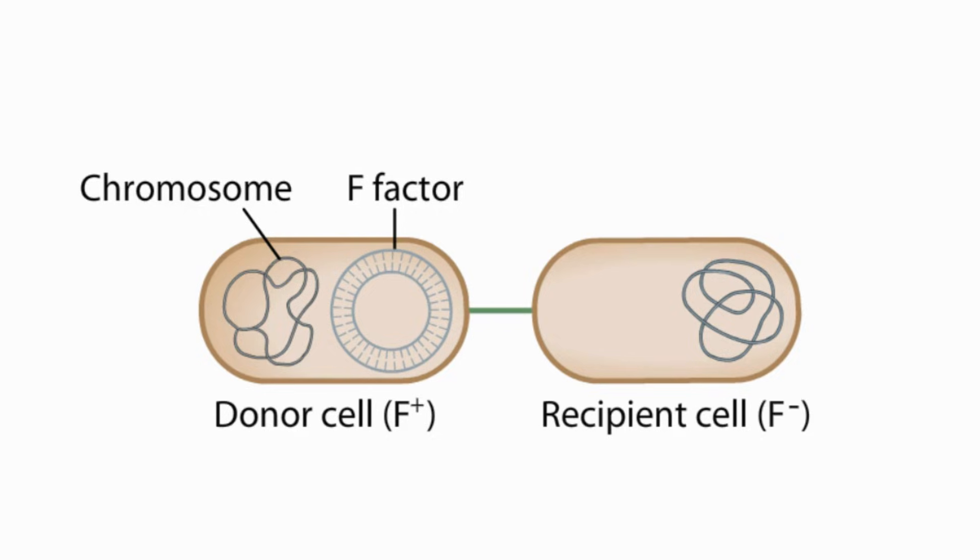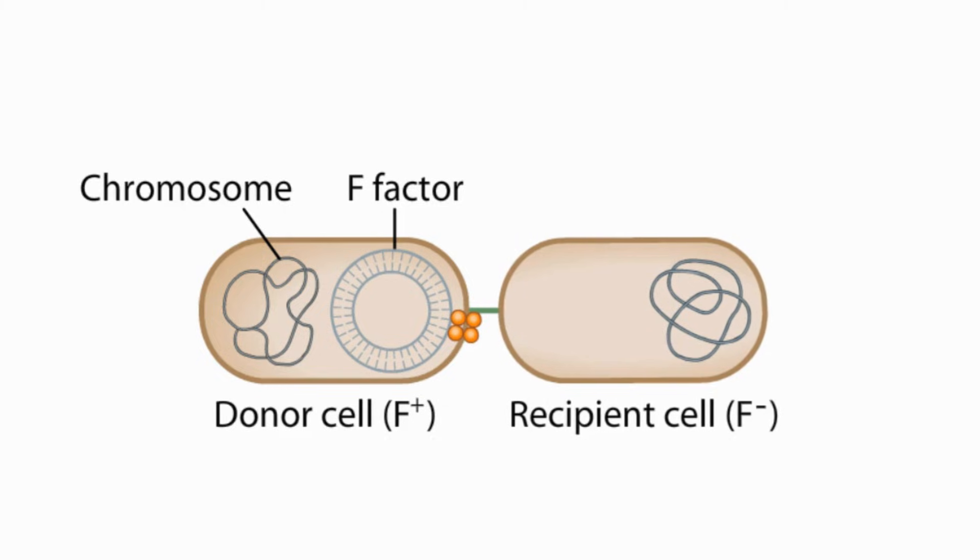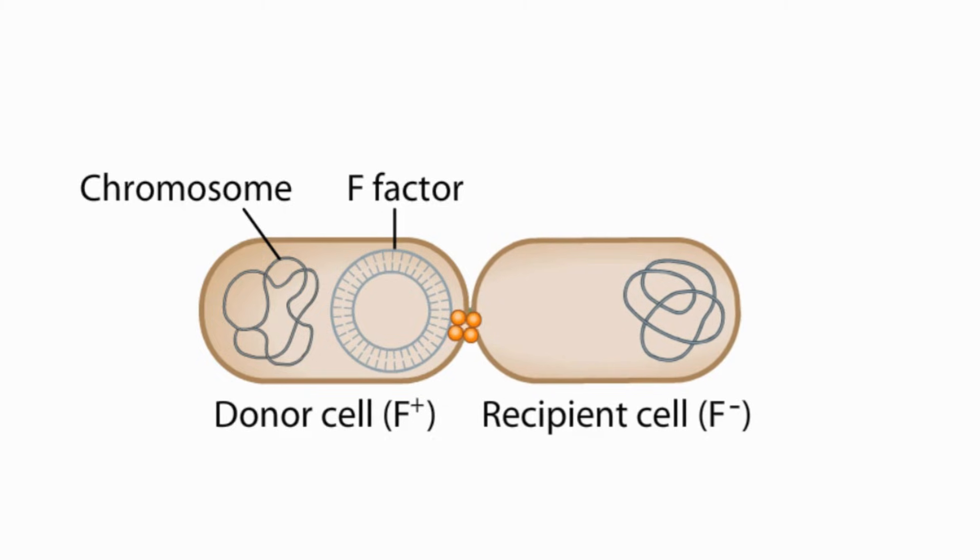The F-plus cell makes a variety of proteins involved in DNA transfer, including a large multi-protein complex called relaxosome at the base of the pilus. Conjugation begins when cell-cell contact occurs between the F-plus cell and F-minus cell. The membranes fuse, forming a membrane bridge.